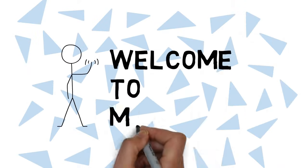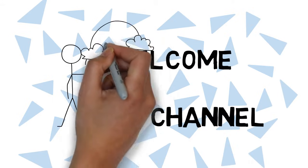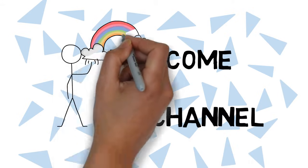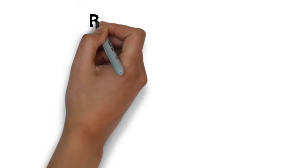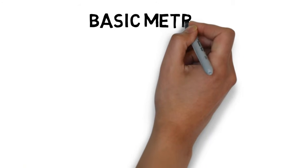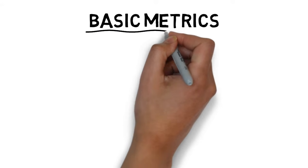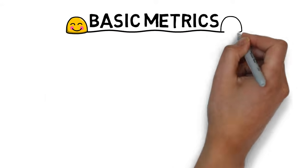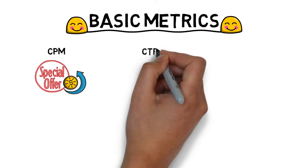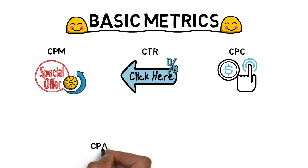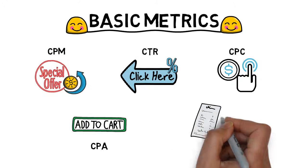Hi everyone, welcome back to my channel. It's Bailey here. I post digital marketing related videos from time to time. If you are interested in getting into the media industry and learning more about media buying, don't forget to subscribe to my channel. Today's topic is really easy — I want to talk about some of the most basic calculations you will need to know for media buying: CPM, click-through rates, cost per clicks, cost per actions, and conversion rate. Without further ado, let's get started.